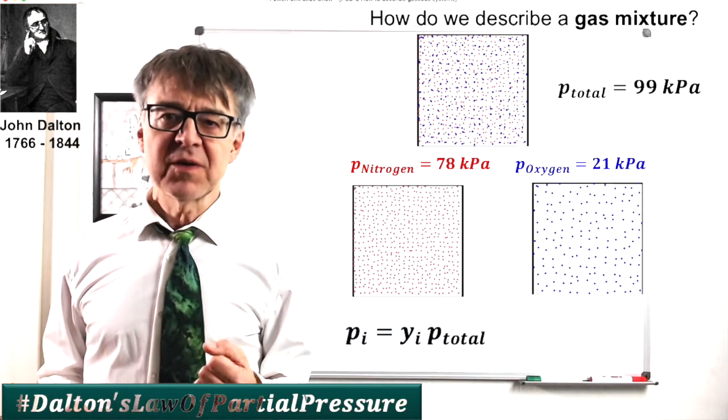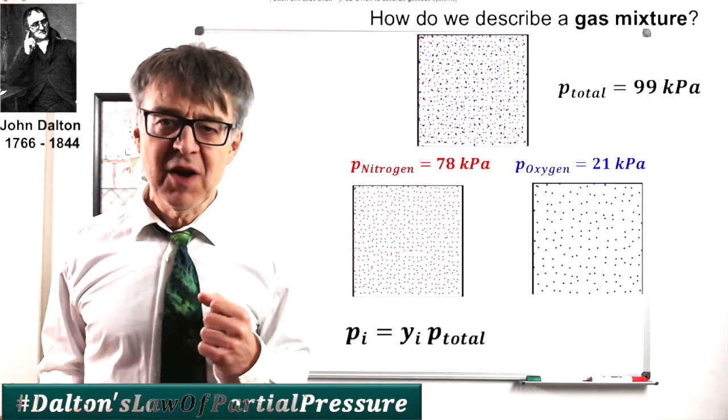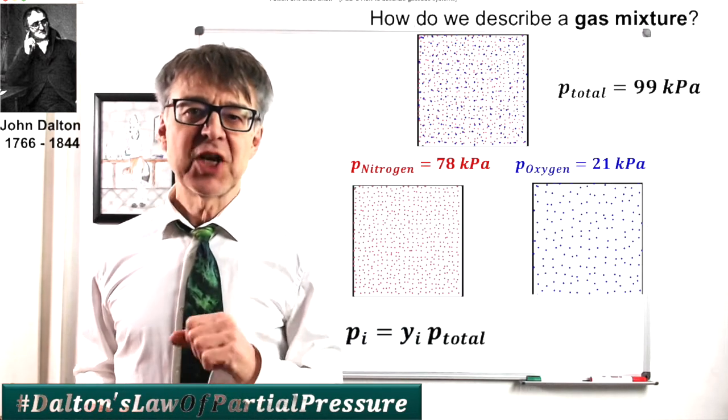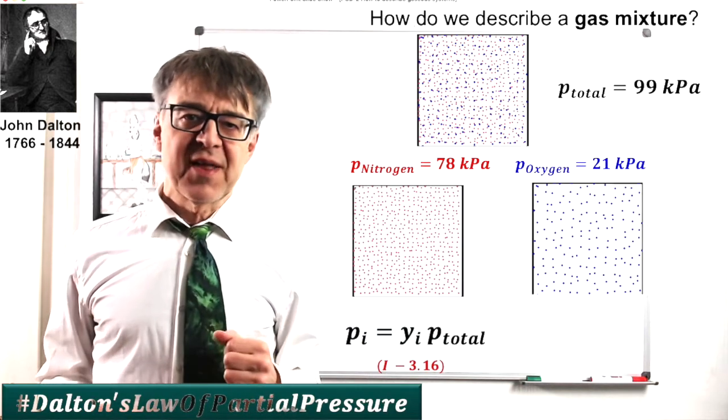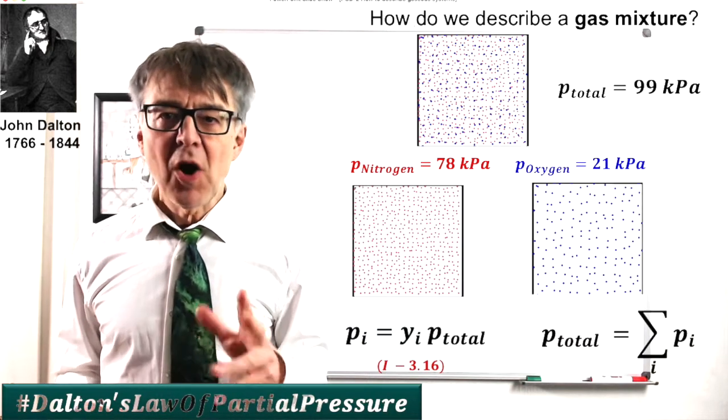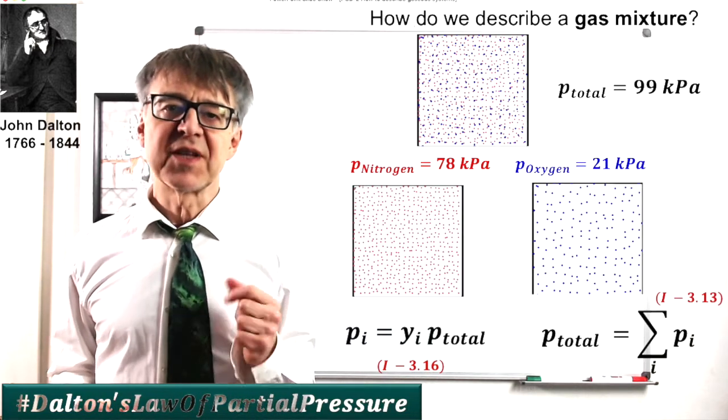With Dalton's law, which are of course derived from the ideal gas law, we can calculate the partial pressure by multiplying the mole fraction of a gas with the total pressure. All partial pressures in a system sum up to the total pressure.